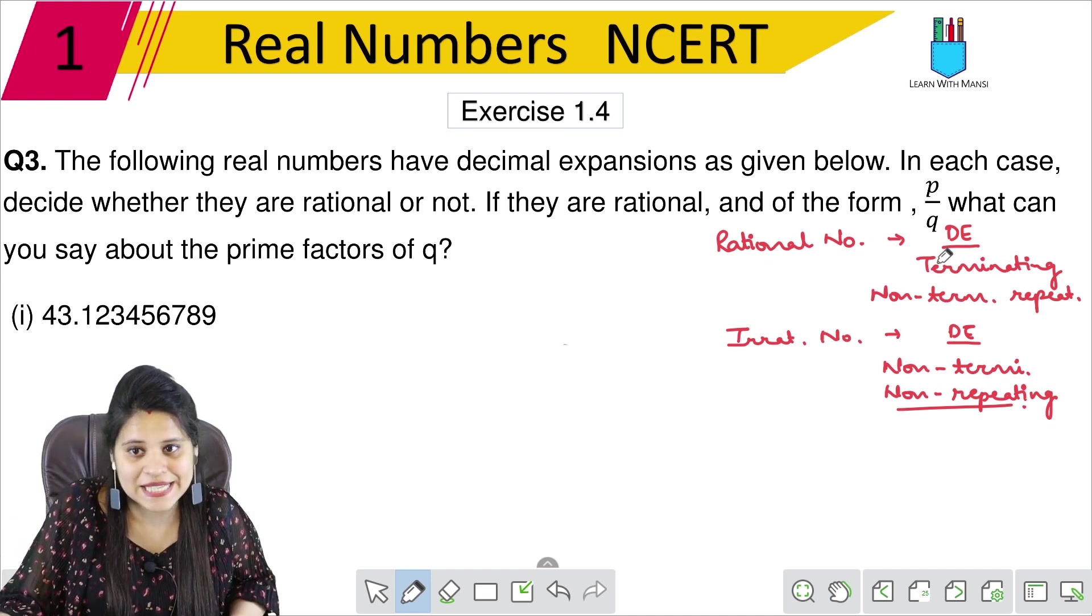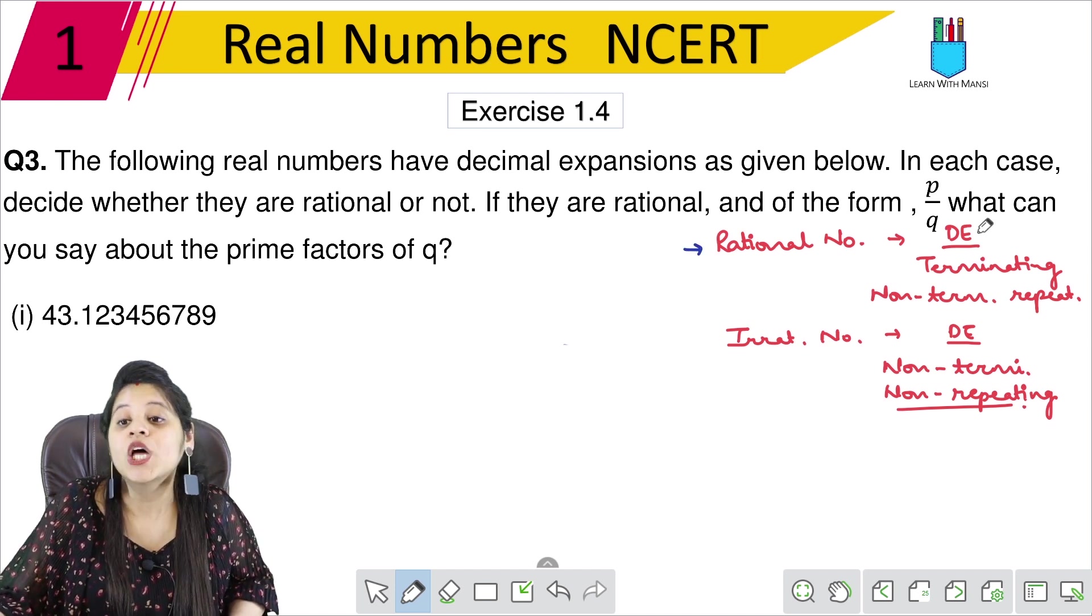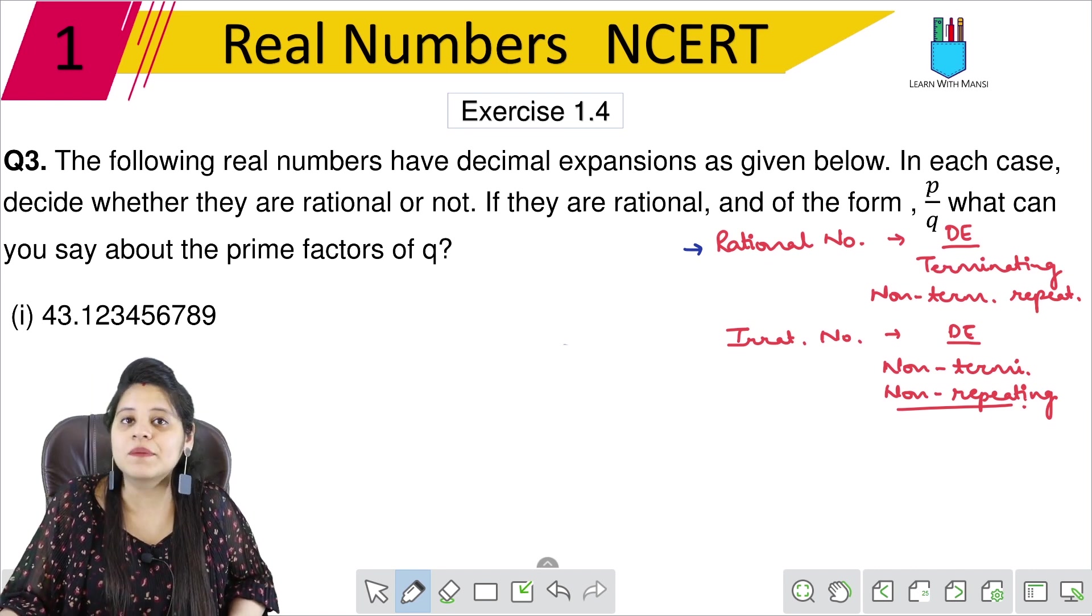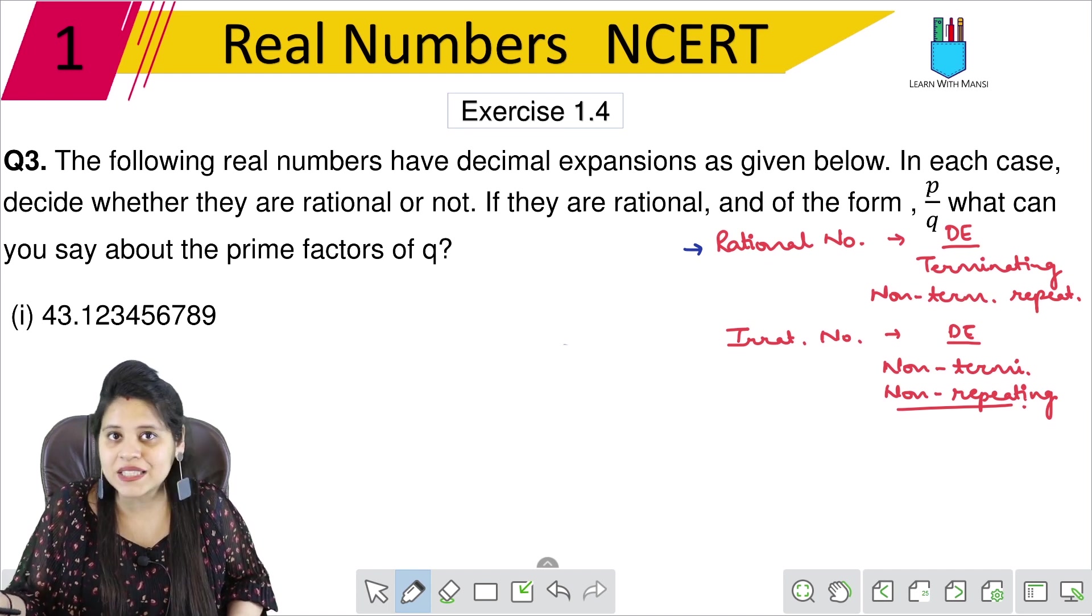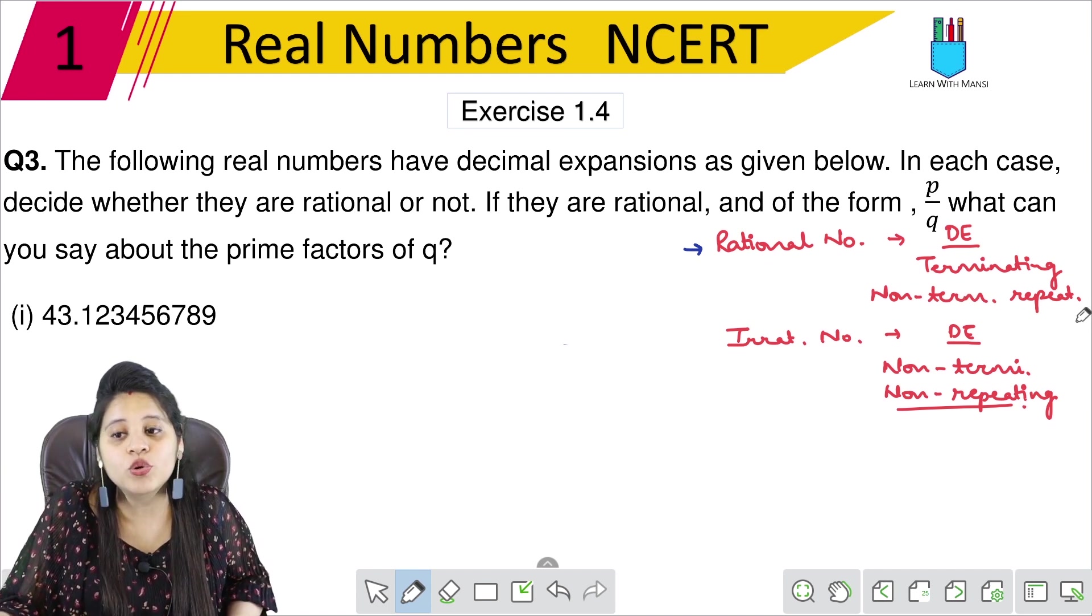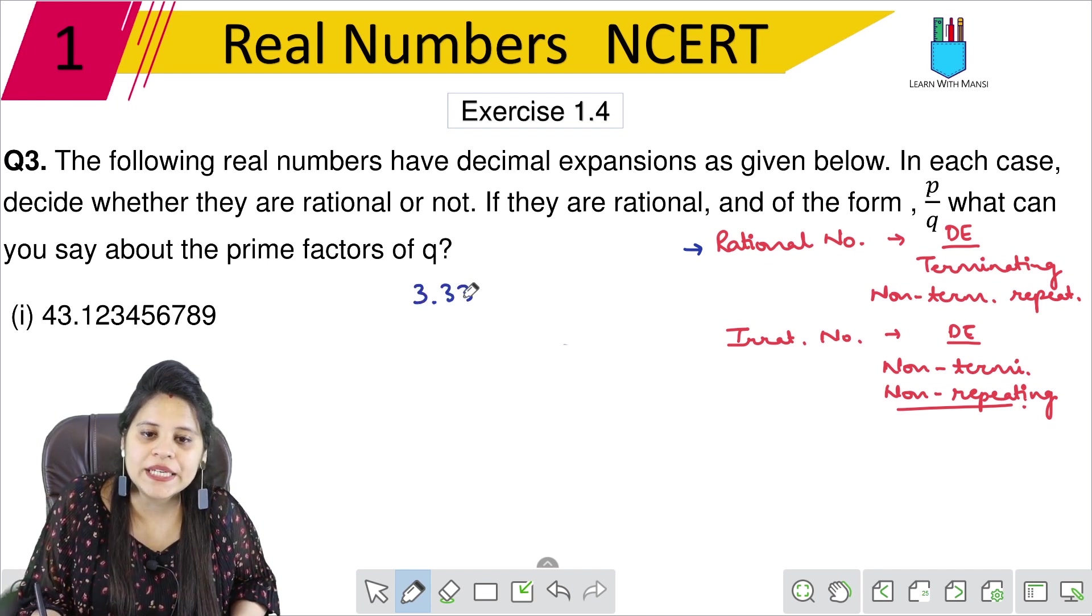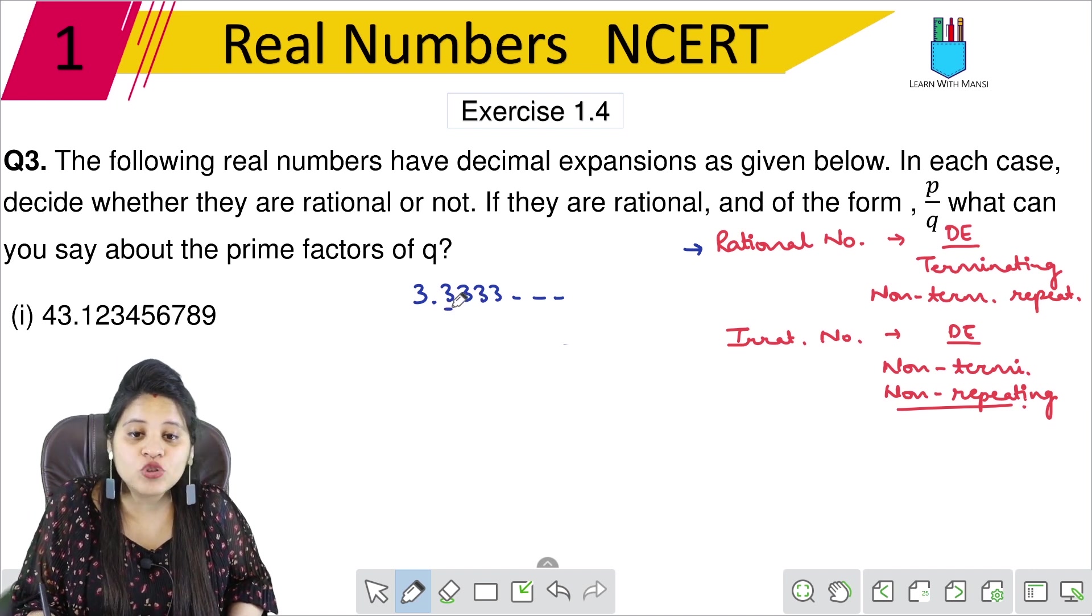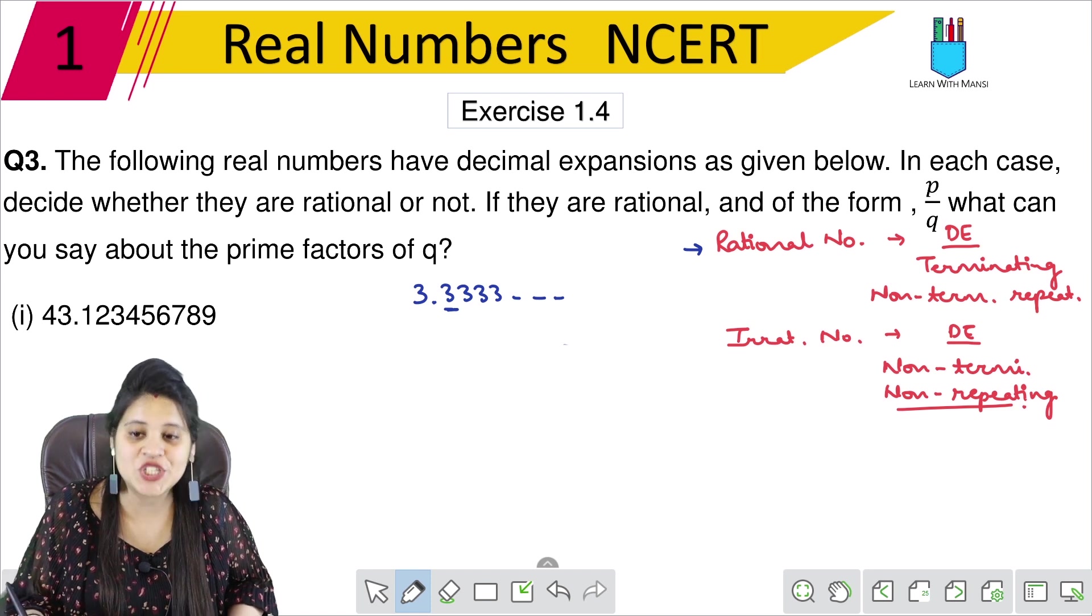We have to understand the main thing that if anyone has a rational number, if the decimal expansion is terminating, terminating means remainder 0, or if non-terminating means remainder is not finished but it is repeating. For example, 3.33333. It is non-terminating, but this 3 is repeated. So this means rational number decimal expansion.